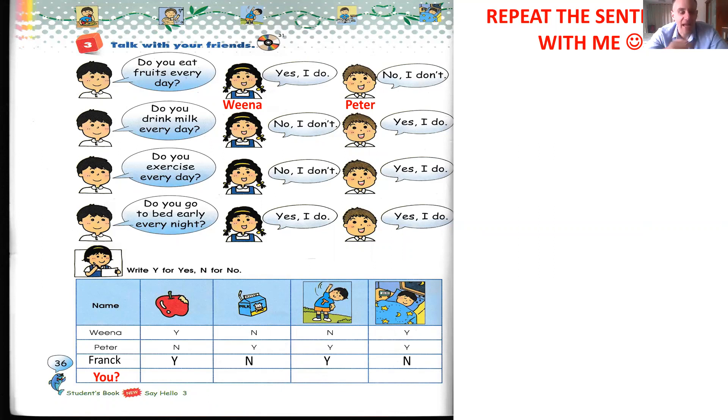Now let's take a look at this chart. This is a chart, Y for yes and N for no. About Wina, she eats fruits every day. Repeat after me. She eats fruits every day. She eats because you use she. She doesn't drink milk every day. She doesn't exercise every day. She goes to bed early every night. Be careful because when you use a third person, he or she, it changes a bit.